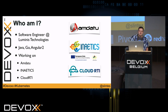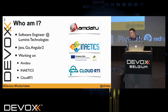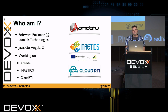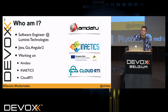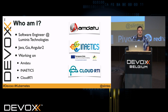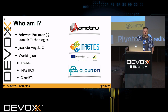At Luminous Technologies I'm working on three projects. The first is Amdatu — a set of open source components for modular Java development based on OSGI. Then last year I was mainly busy with the Ionetics project, an open source project about researching how to work with modular distributed applications. This year I was mainly busy with Cloud RTI, our runtime infrastructure for hosting dockerized applications in the cloud, which also has some open source components — for example, a Kubernetes Java client.